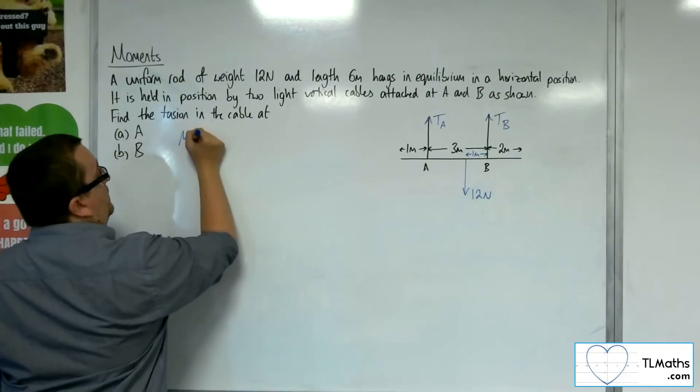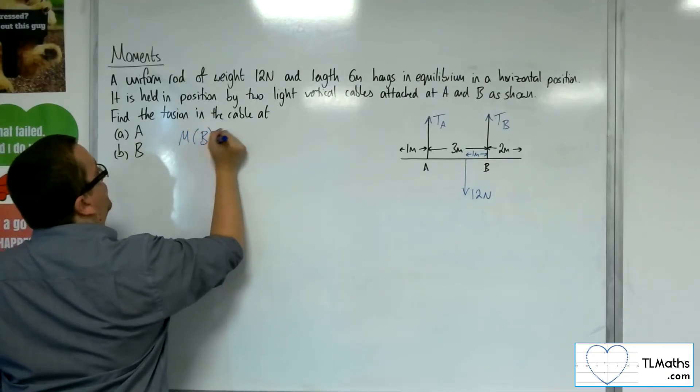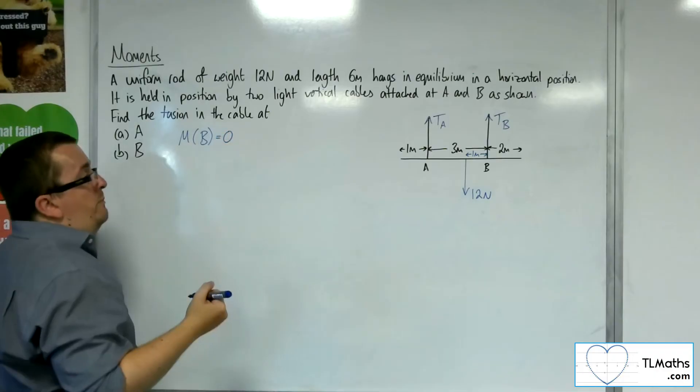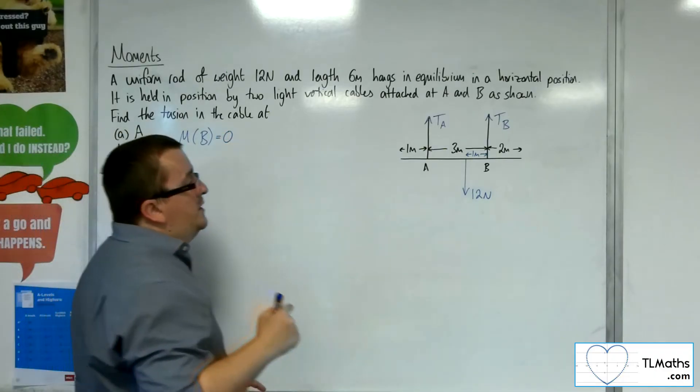So if I take moments about point B, we're in equilibrium, so it's got to be 0. So what have I got?